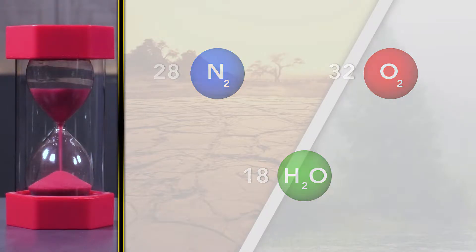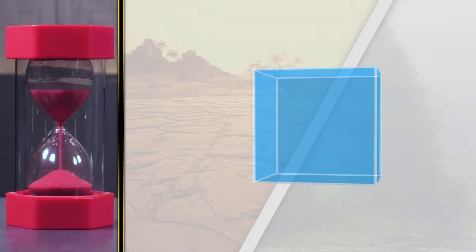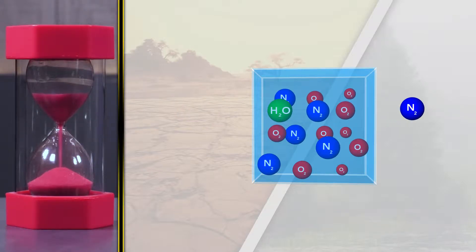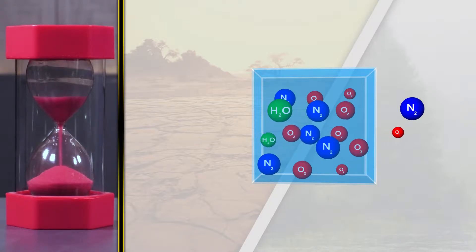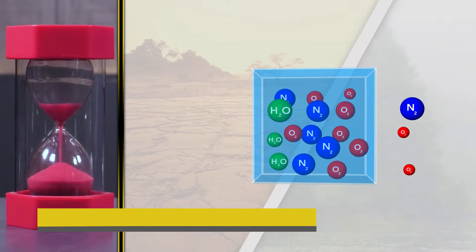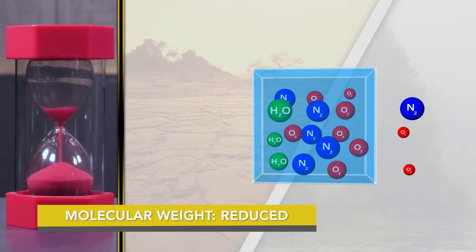And that brings us back to Avogadro. If we imagine some volume of air, we know it contains a fixed number of molecules. If we introduce water vapor, well something has to leave that volume to make room. So for every molecule of water vapor that enters the volume, a heavier, more dense molecule of oxygen or nitrogen must leave. As we replace oxygen and nitrogen in the air, the molecular weight of that air parcel is reduced, creating less dense air. Okay, one minute. That's why moist air is less dense than dry air.